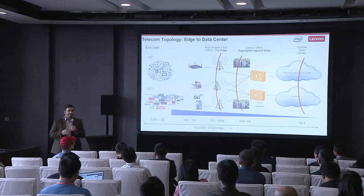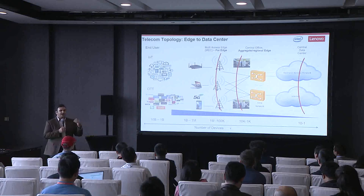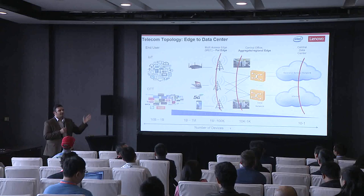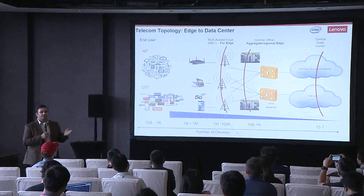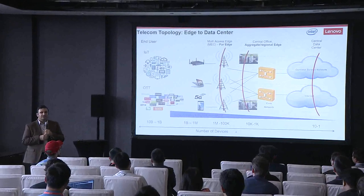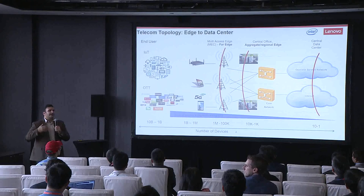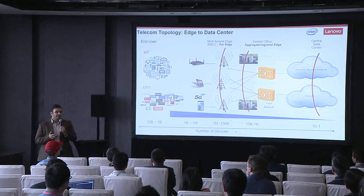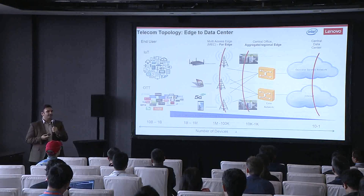When you look at how NFV was deployed and consumed, some principles might apply to edge, but there are also a lot of differences. The main one is that now you need to manage thousands of sites across your network. If we've learned anything from NFV, it's that you cannot have siloed solutions. I was with a customer last week — they literally had a siloed infrastructure for each of their vendors because no two vendors were supporting the same infrastructure.